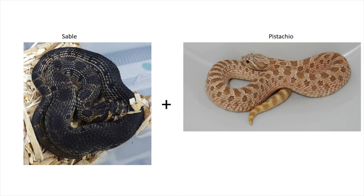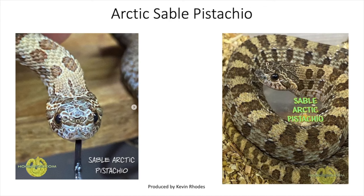The next combination is sable and pistachio. My friend Kevin Rhodes produced this snake this year — and this isn't just a sable pistachio, it's an arctic sable pistachio, so it's the only one I know of so far. We're also finding out that pistachio is not actually recessive but is polygenetic.